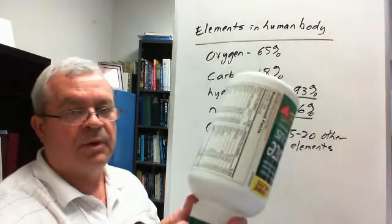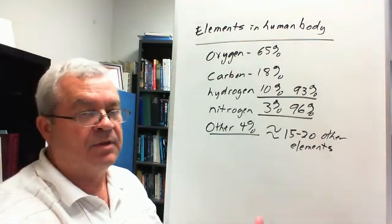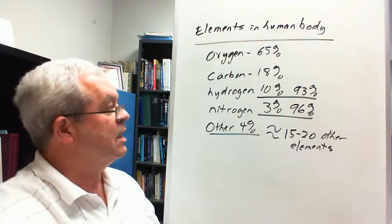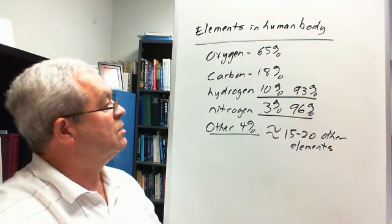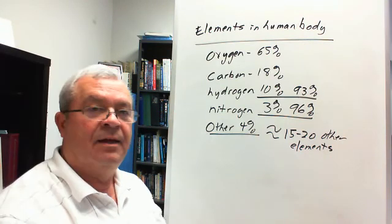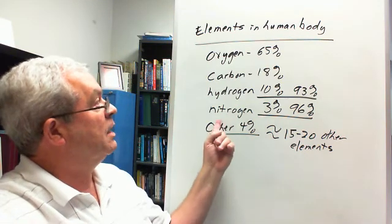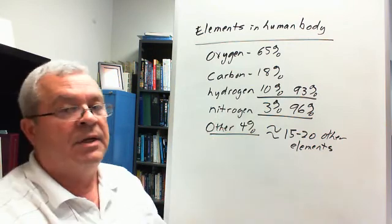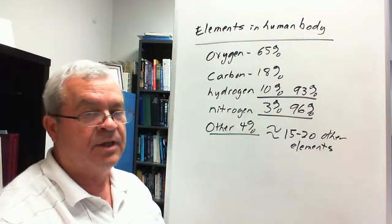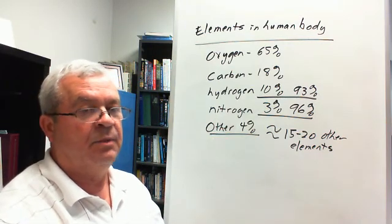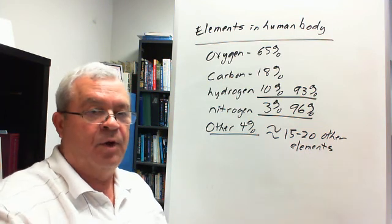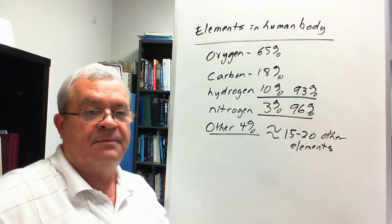Why do they put them in this vitamin and mineral? Obviously, somebody figured out that we need those elements in small amounts, and so there you have it. The elements in the human body, mostly the big four. Oxygen, carbon, hydrogen, nitrogen, 96% there, 4% a bunch of others in relatively small quantities. Okie dokie, that's it.